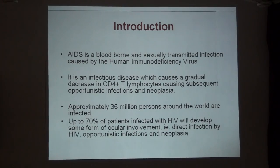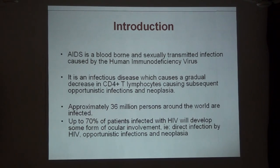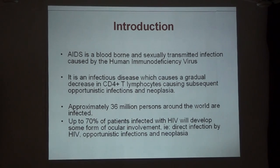At the outset, Acquired Immunodeficiency Syndrome is a blood-borne and sexually transmitted infection caused by the HIV virus. This disease is characterized by a gradual decrease in CD4 lymphocytes with subsequent opportunistic infections and neoplasia. Around 36 million people throughout the world are infected with this disease, and up to 50 to 70% of HIV infected people may have some form of ocular involvement — due to direct HIV infection, opportunistic infection, or neoplasm.